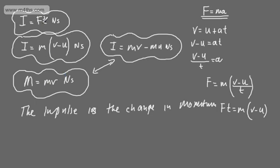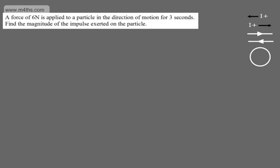Let's recap. Impulse is force times time, or mass multiplied by final velocity minus initial velocity — a vector quantity measured in newton seconds. Momentum is the product of mass and velocity, also a vector quantity measured in newton seconds. Let's look at some questions.